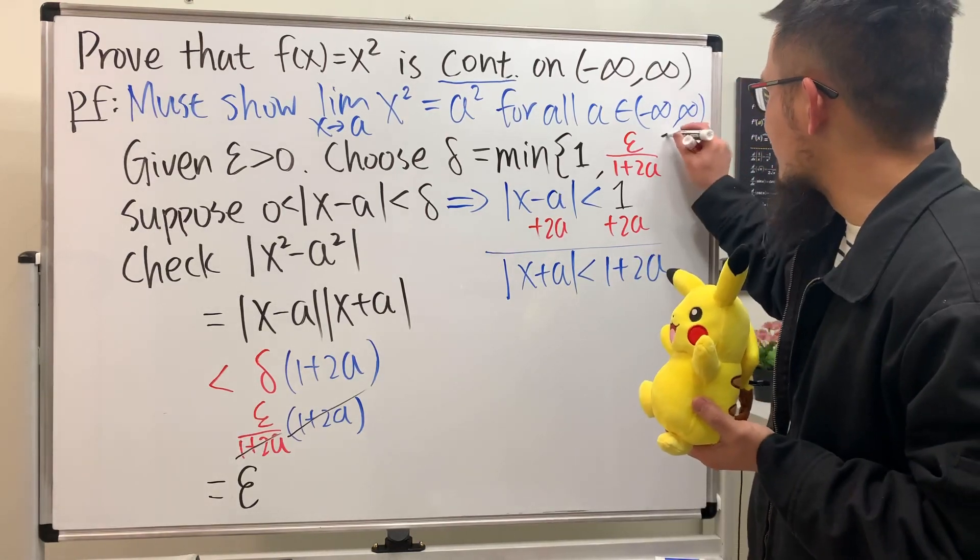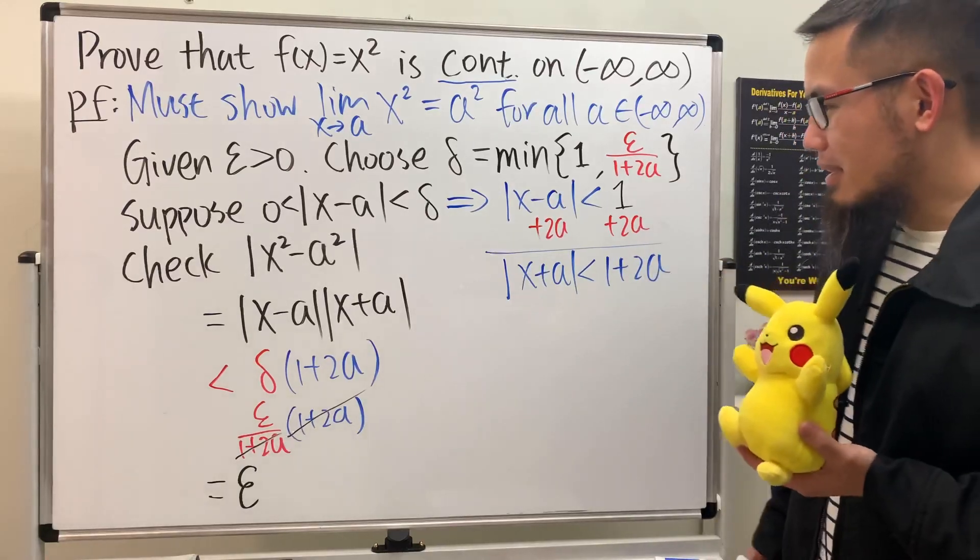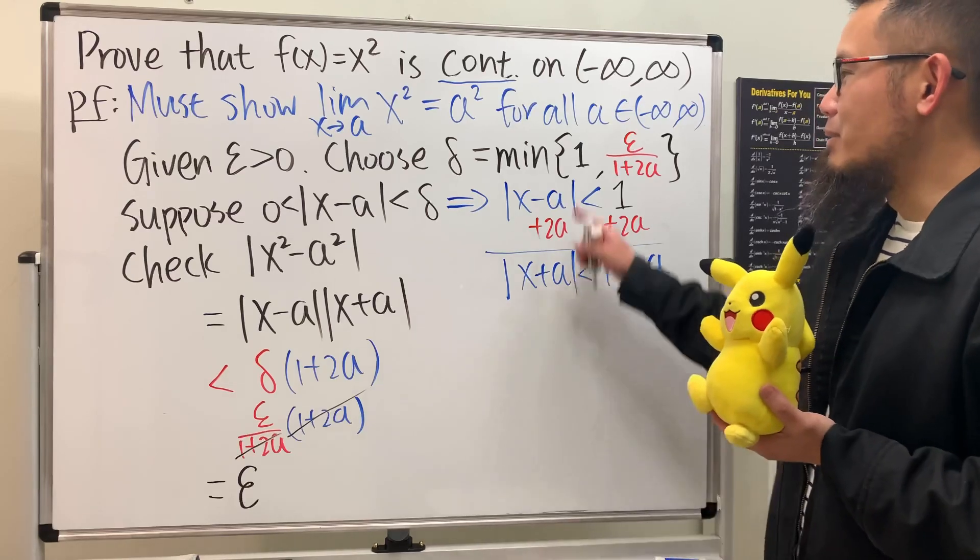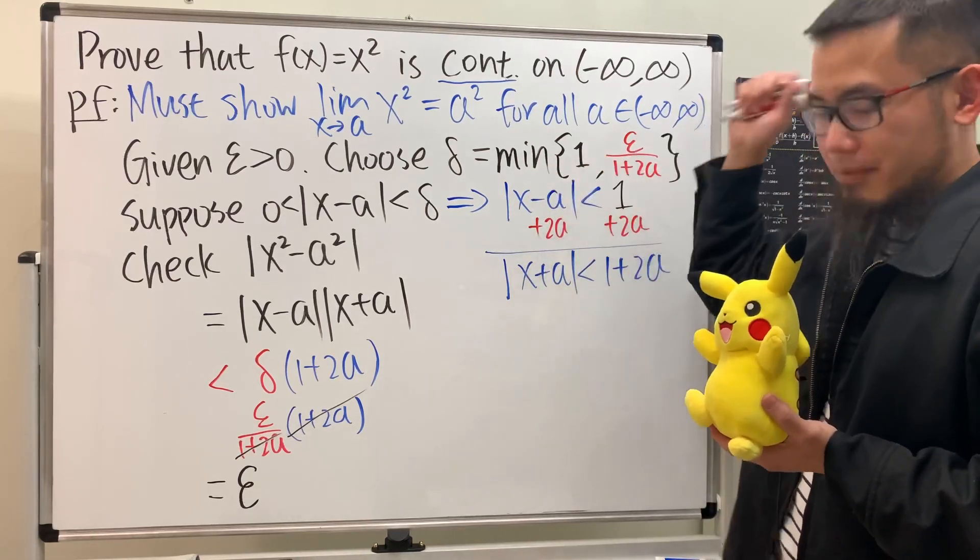Hmm, interesting. Let's see, let's see. What if a is equal to negative 1 half? In that case, remember earlier I told you the minimum here is...